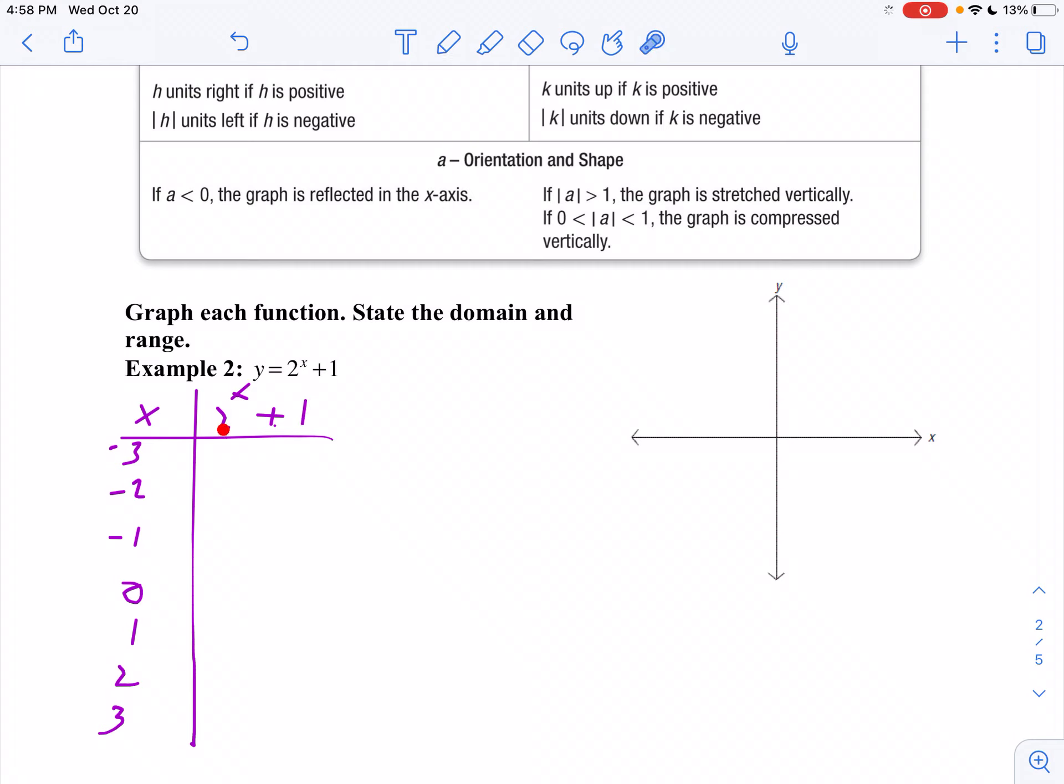So 2 to the 0 is 1, 1 plus 1 is 2. 2 to the 1st is 2 plus 1 is 3. 2 to the 2nd is 4 plus 1 is 5. 2 to the 3rd is 8 plus 1 is 9. 2 to the negative 1 is 1 half, so you're at 1 and a half, which I think I'll write as 1.5. And then 2 to the negative 2 is 1 fourth, so that would be 1.25. And then 2 to the negative 3 would be 1 eighth, so that would be 1.1.